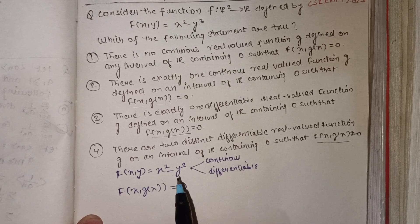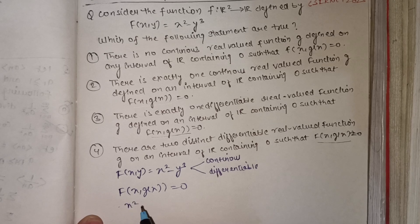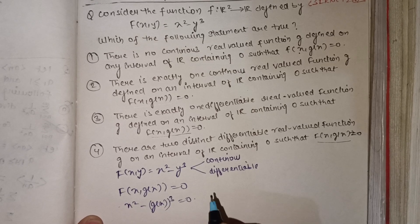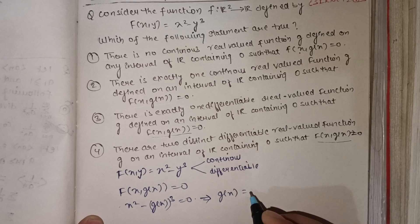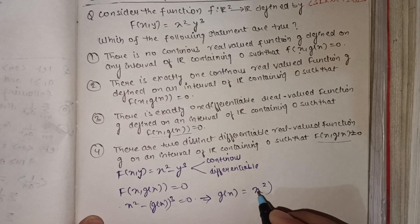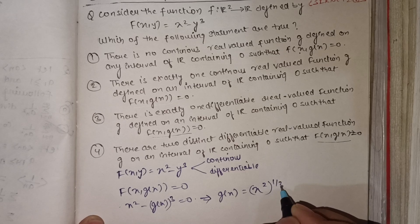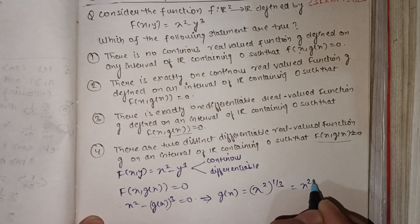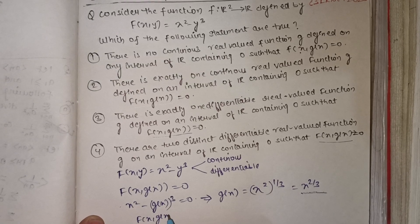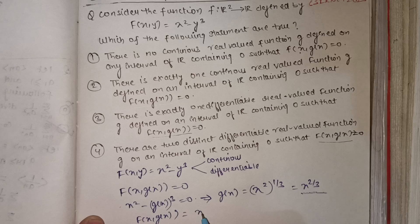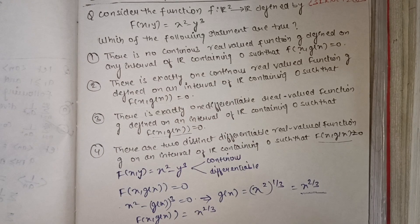Substituting y = g(x), we get x² − (g(x))³ = 0, which implies g(x) = x^(2/3). So the function f(x, g(x)) evaluated with g(x) = x^(2/3) satisfies the equation.